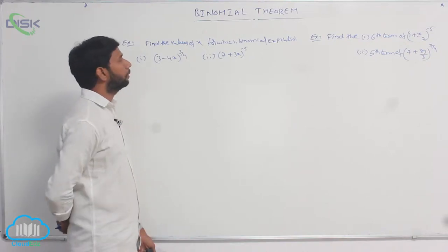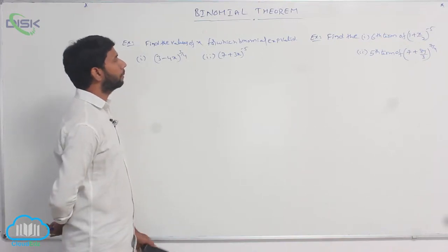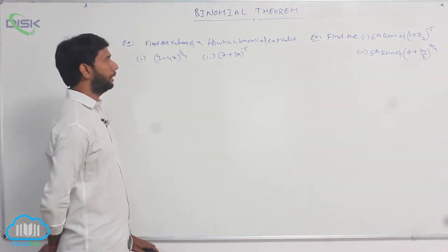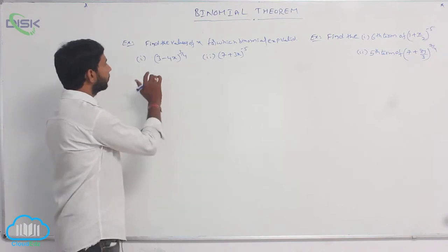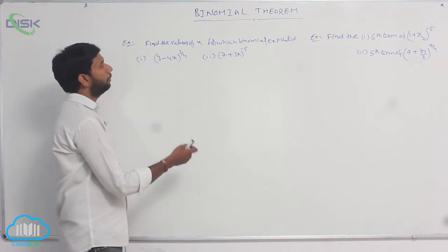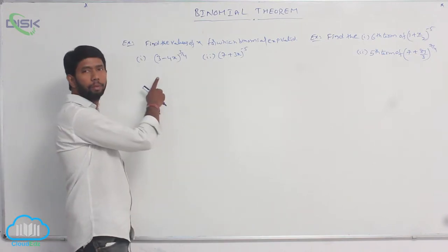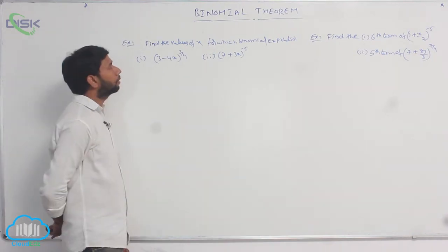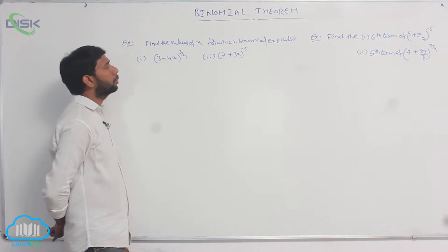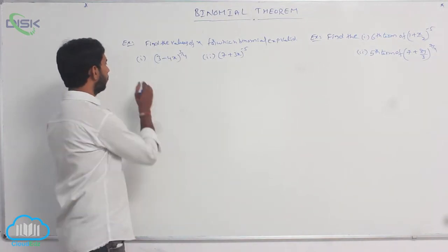Find the values of x for which the binomial expansion is valid. Any binomial expansion of the form (1 ± x)^n is valid when mod x is less than 1.